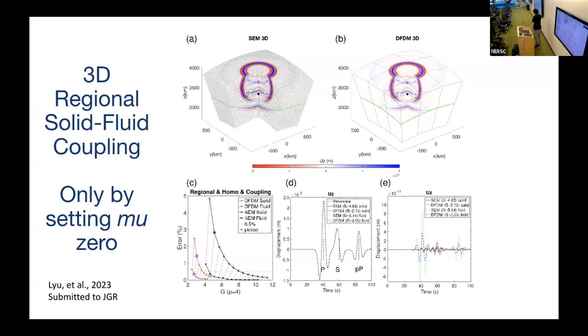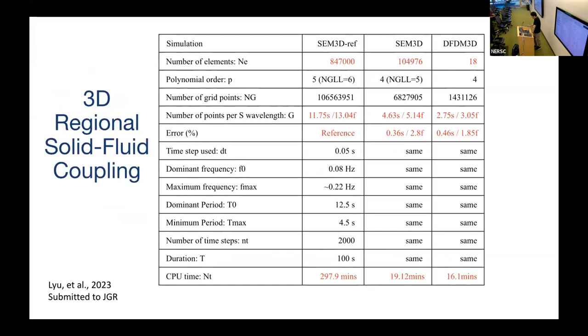Traditionally, in spectral element or finite element methods, people solve the acoustic wave equation in the outer core and the elastic wave equation in the lower mantle. But in our case, we can use one equation—the elastic wave equation—for the entire system. This is very easy to code, we don't need to separate the domains, and it's very efficient.